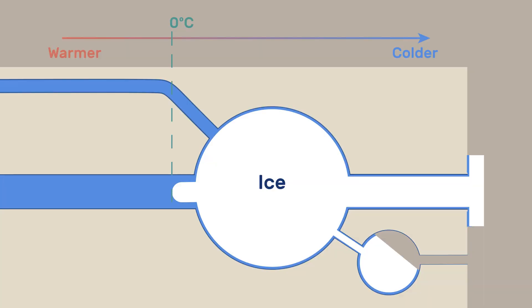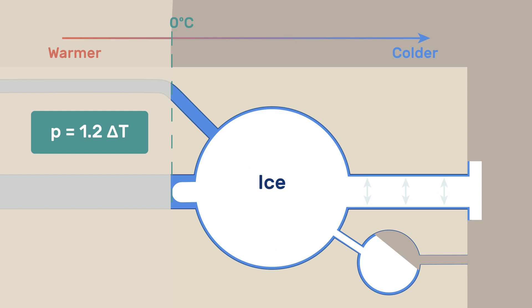As an example, we consider that 0 degrees Celsius is reached to the left of our large pore and that ice begins to form in the colder region to its right. Where the temperature is below 0 degrees Celsius, the ice pushes against the pore walls with a pressure of 1.2 times delta T. So the pressure is higher in the colder zone.